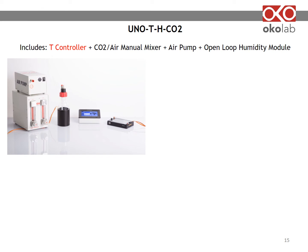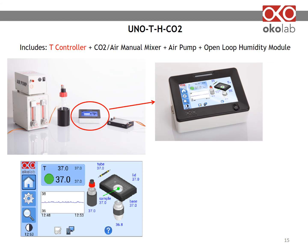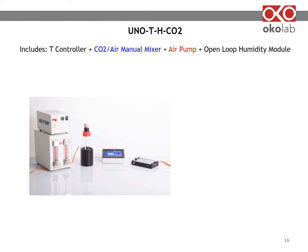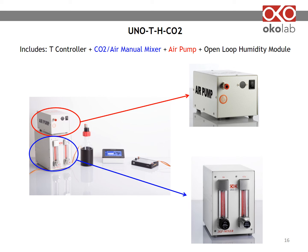UNO THCO2 includes a temperature controller with a 4.3-inch touchscreen interface. This intuitive, user-friendly interface has onboard memory to log data and a mini-USB port to download it to a memory card. UNO THCO2 also includes a dual gas mixer accepting CO2 and background air — this is a manual mixer with 1% accuracy. An air pump is also included.